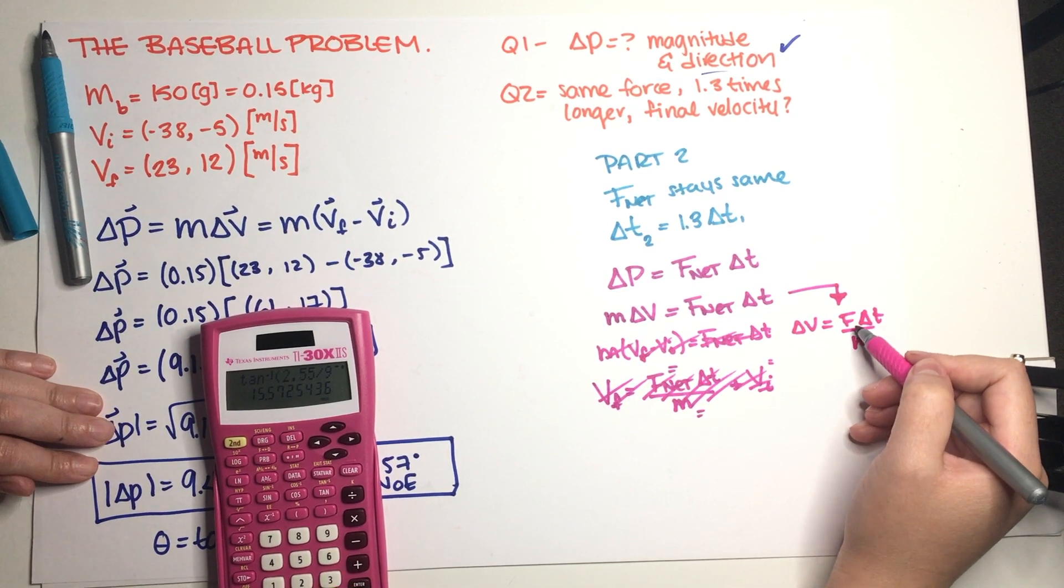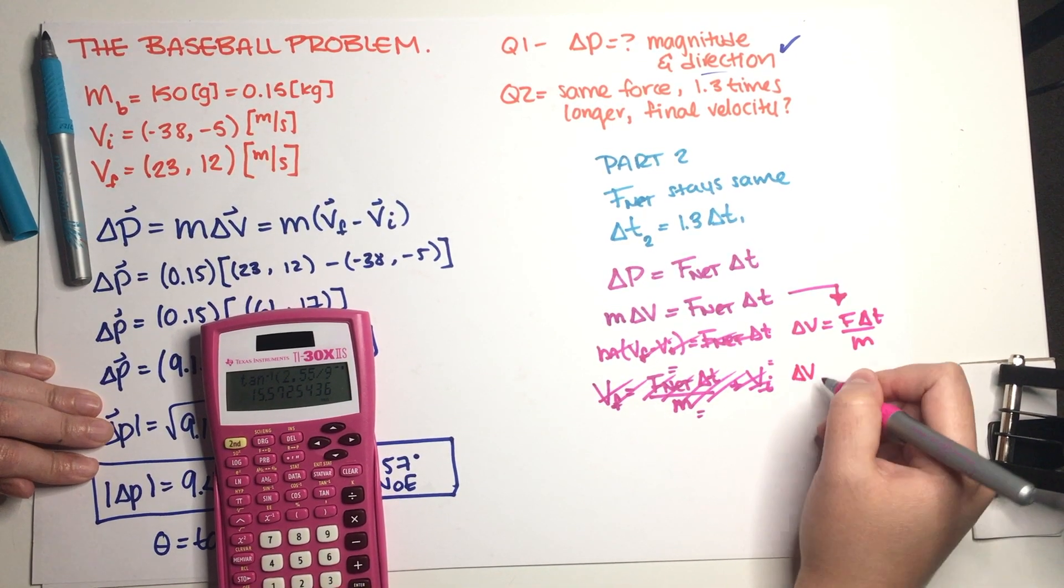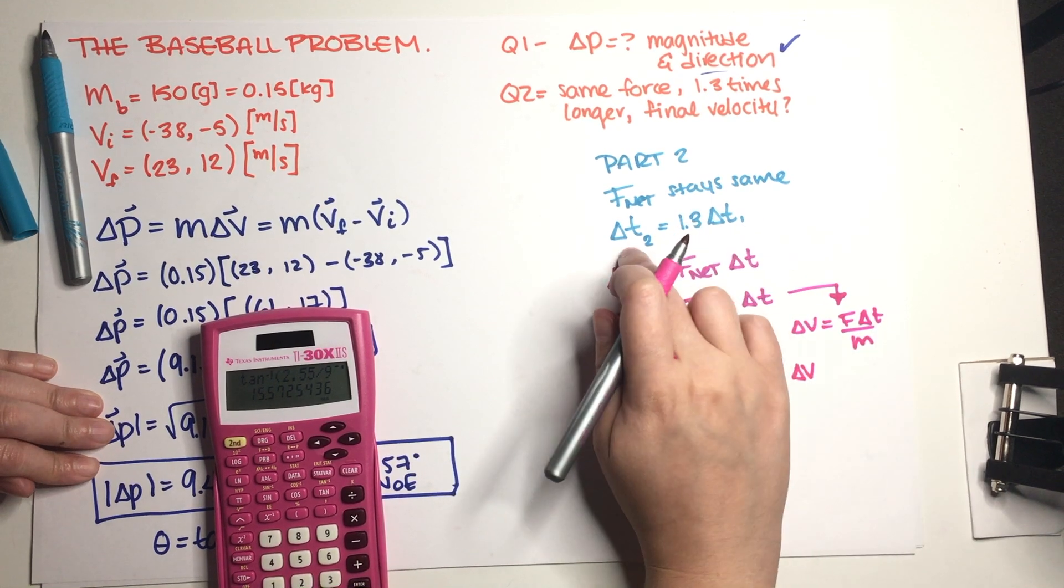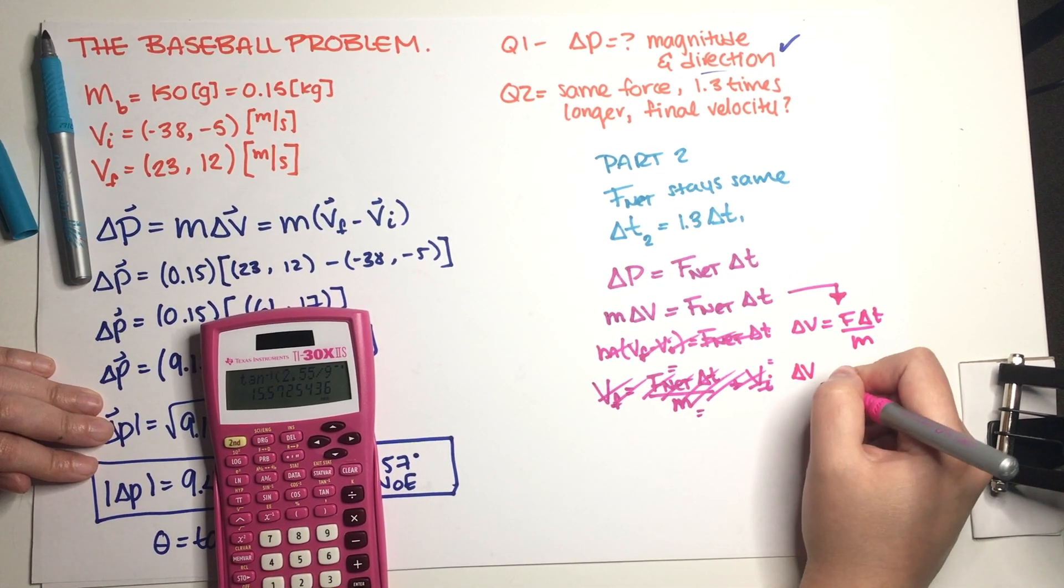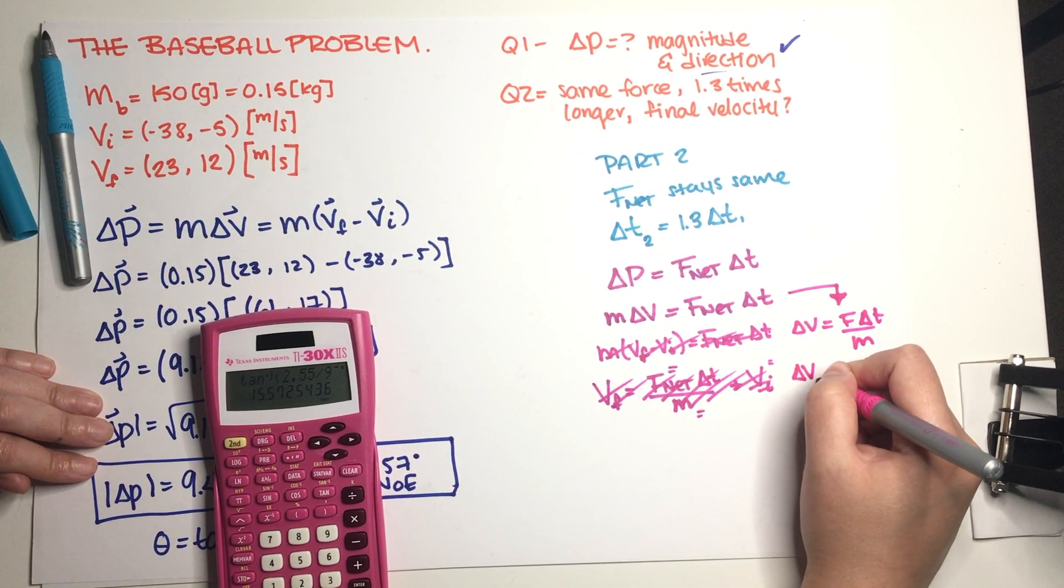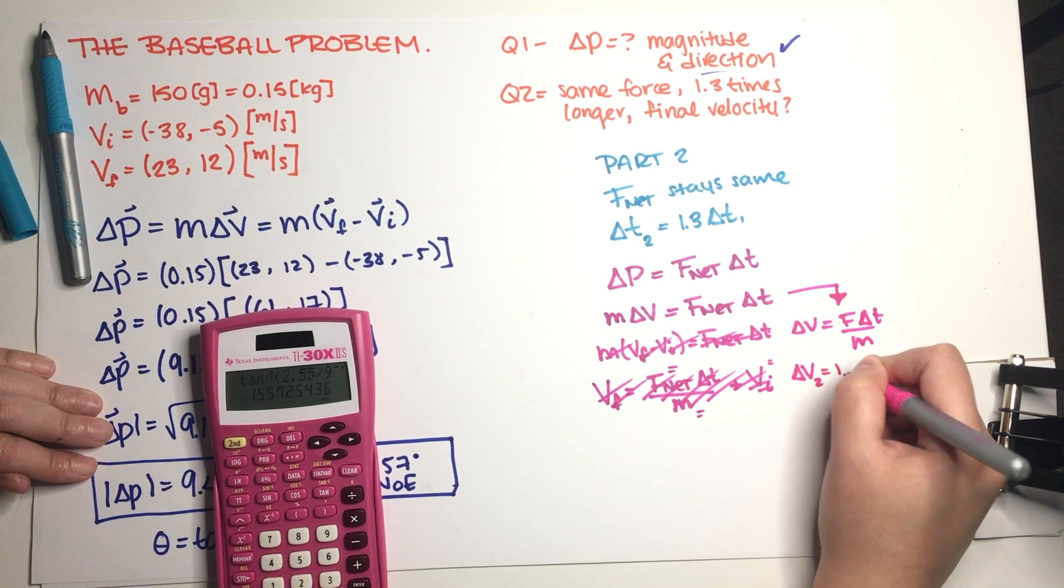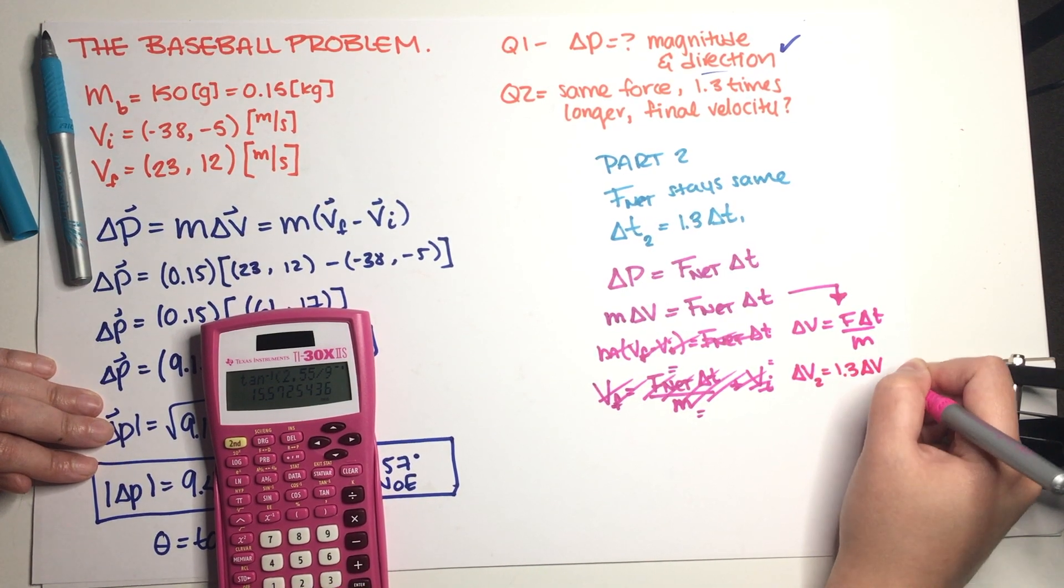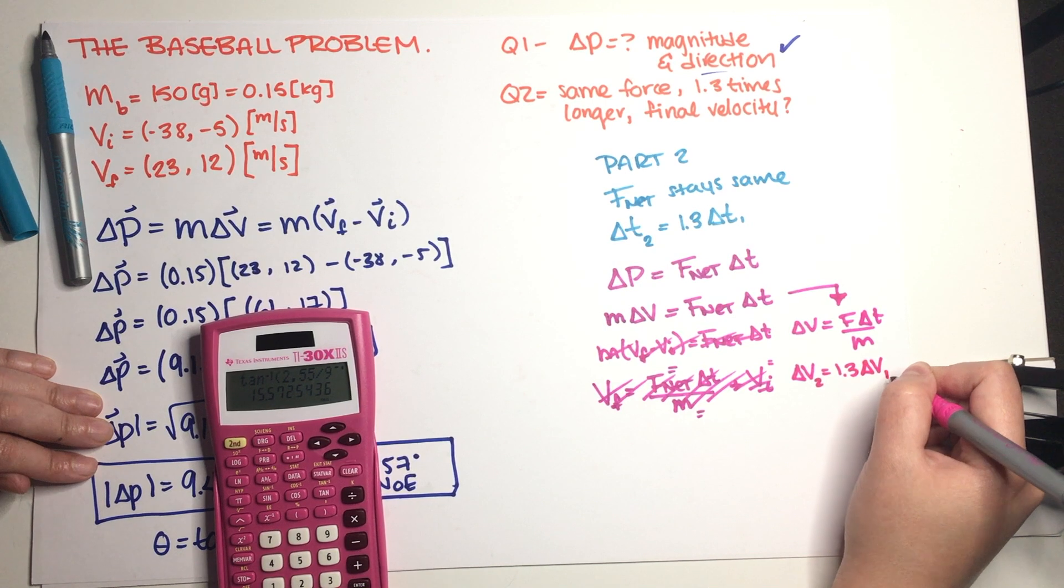So delta v is equal to F delta t divided by m. So now, yeah this makes way more sense. So now delta v, because this is 1.3 times bigger than the other one, our new delta v which I'm just going to call delta v2 is just going to be 1.3 times bigger than delta v from part A, right?